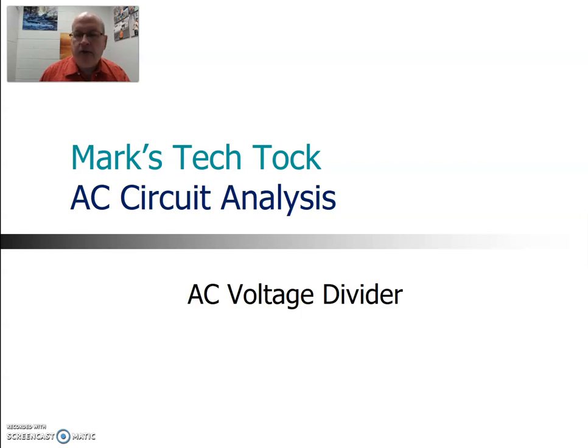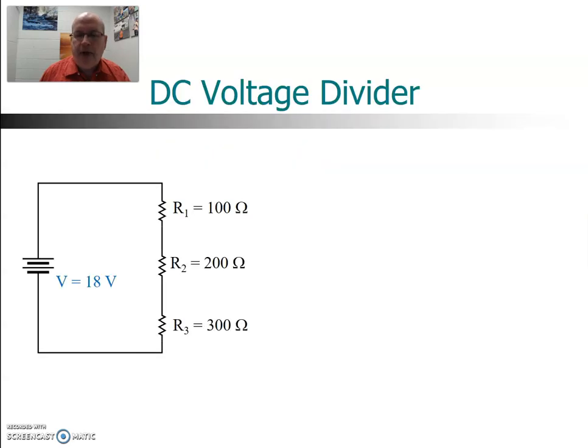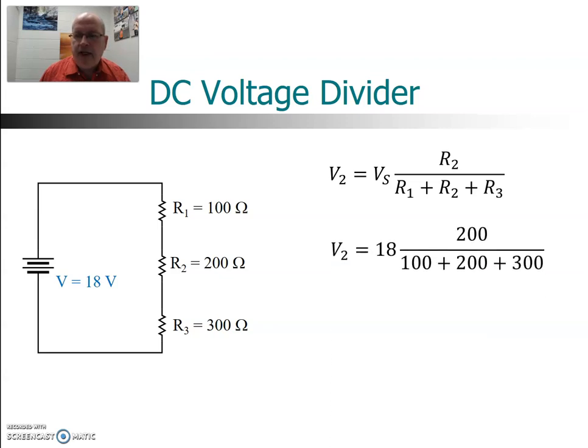In order to see how this works, we're going to first recap how to use voltage divider in a DC circuit. So here we have a series circuit, voltage source 18 volts, and we want to find the voltage across the second resistor. So all we do is say the voltage across the second resistor, we'll call that V2, is equal to the source voltage multiplied by the second resistor divided by the sum of all three resistors. So in this case that would be 18 volts multiplied by 200 ohms divided by the sum of the resistors, and we will get a value of 6 volts.